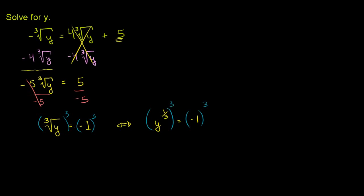That's the whole point: if you take the cube root of y to the third power, that's just y. So the left-hand side becomes y. On the right-hand side, negative 1 to the third power: negative 1 times negative 1 is 1, times negative 1 again is negative 1. So we get y is equal to negative 1 as our solution.